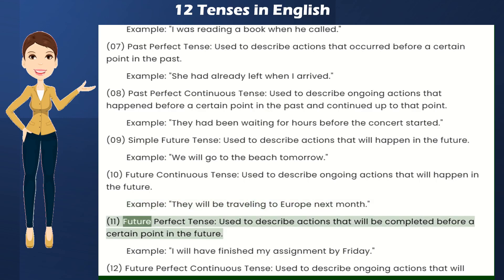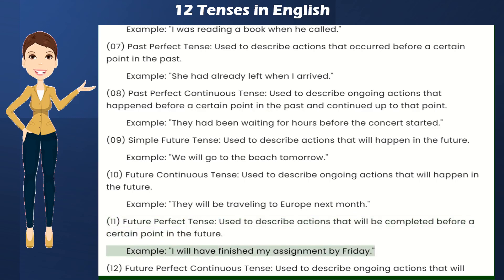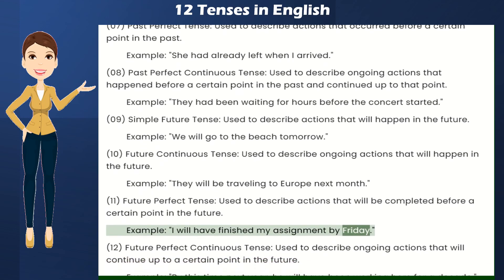Future Perfect Tense — used to describe actions that will happen in the future. Example: I will have finished my assignment by Friday.